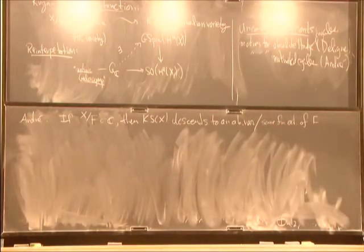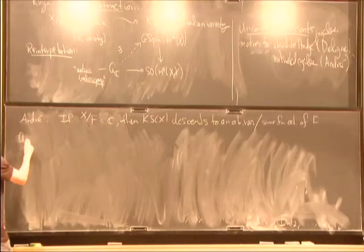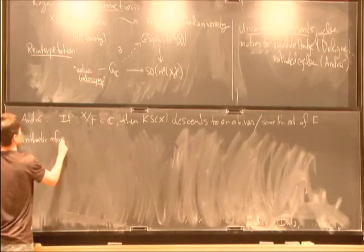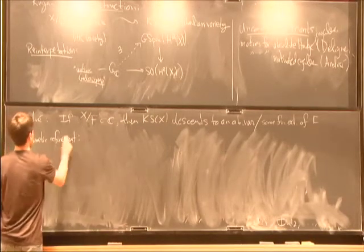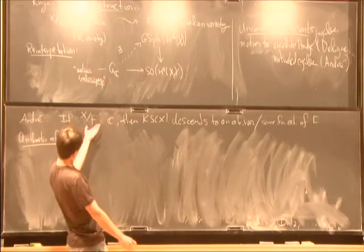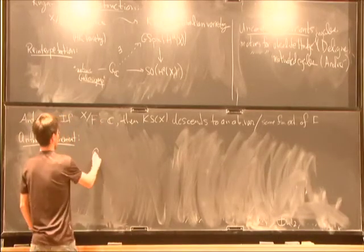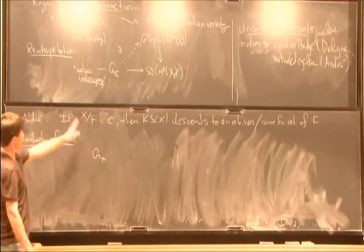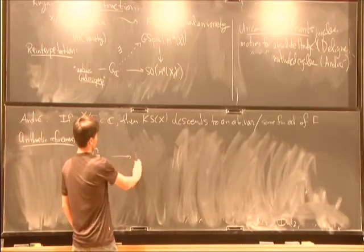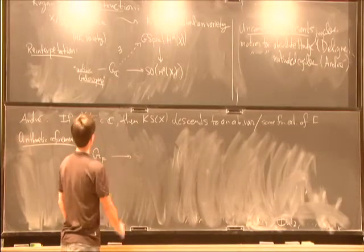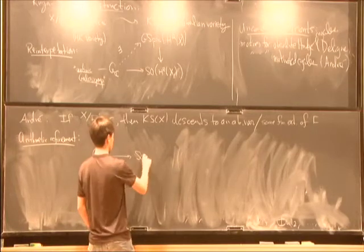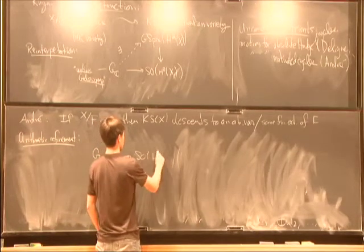But in fact you can go farther than this. There's a fairly sharp arithmetic refinement. Over F, what you're getting here is a representation of the corresponding motivic group for motives over F. This doesn't necessarily land in SO, but maybe if you make a quadratic extension of F, it will.